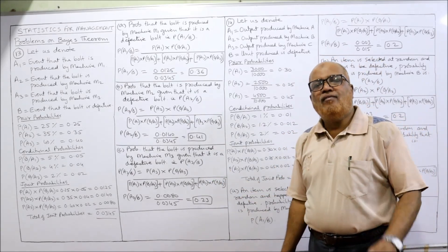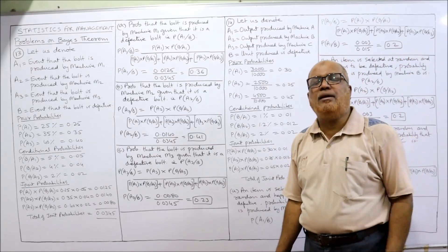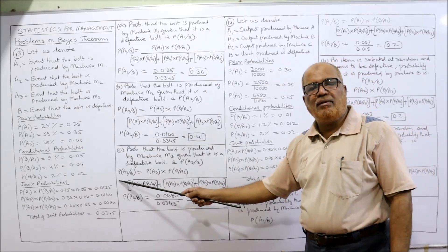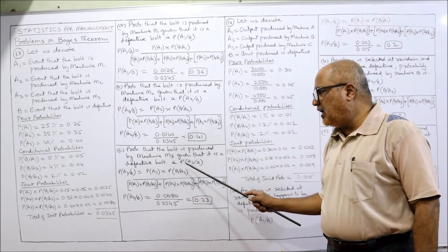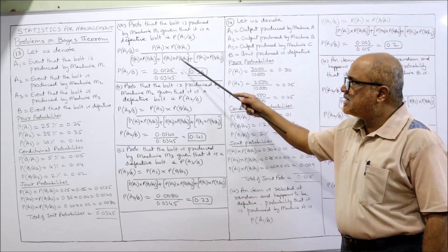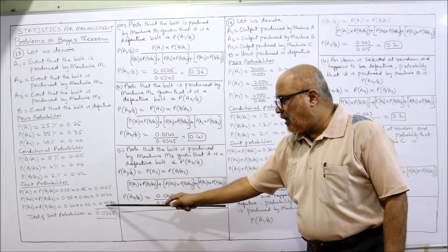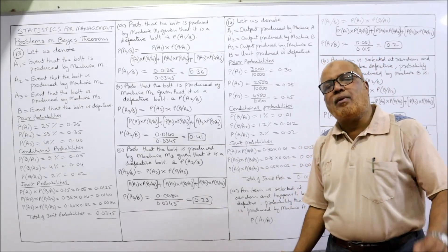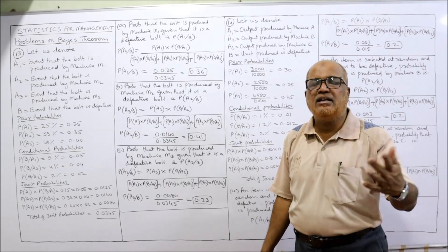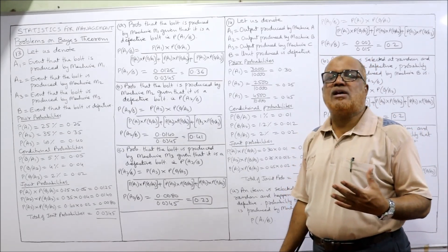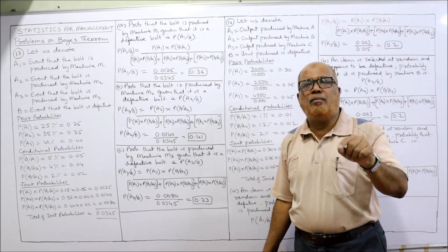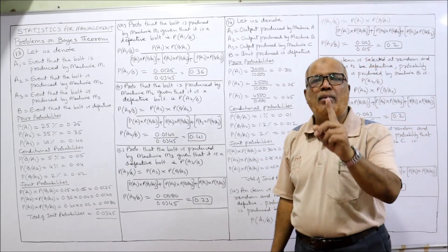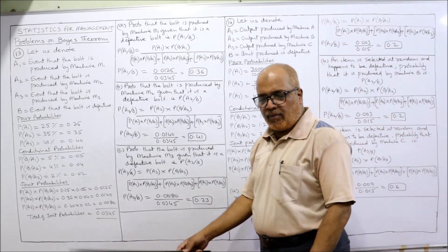Third case: what is the probability that the bolt comes from machine M3 given that it is defective? P(A3|B) = P(A3)·P(B|A3) divided by sum of joint probabilities = 0.008 ÷ 0.0345 = 0.23. To verify, the posterior probabilities must sum to 1: 0.36 + 0.41 + 0.23 = 1. This is the end of problem 13.